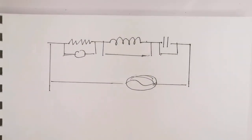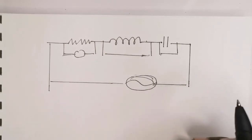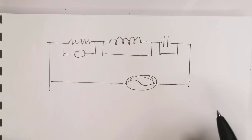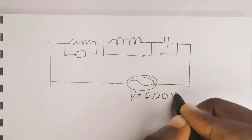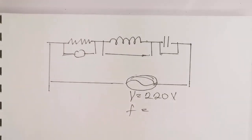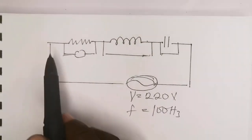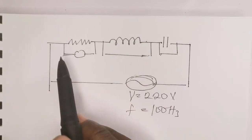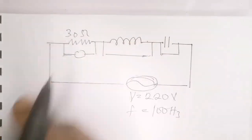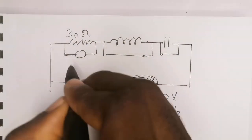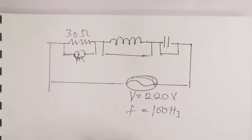This is what the circuit diagram looks like. This is a source, and from the question the source is 220 volts, so we have a voltage supply of 220 volts. The frequency was also given as 100 Hz. The first component is a resistor, and from the question we have a resistor of resistance 30 ohms. The voltage across the resistor we simply call VR.